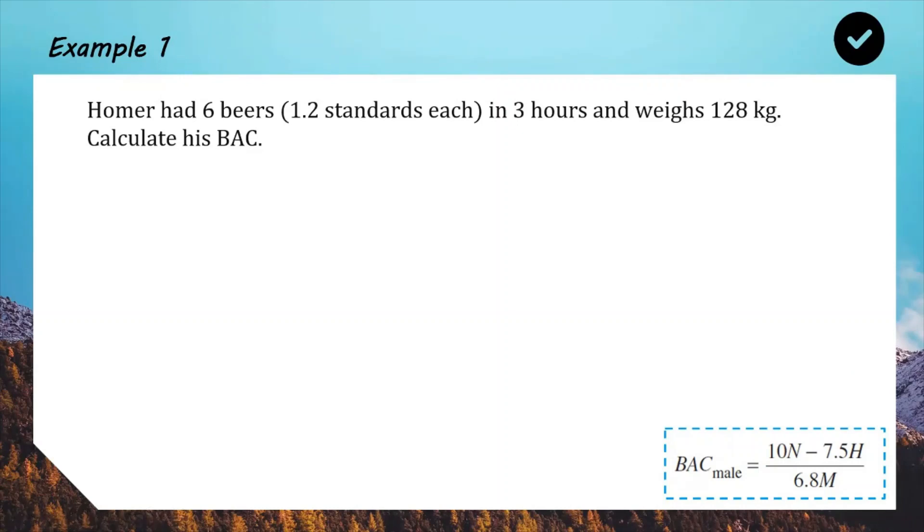Hope you've had a go. Now I'm going to have a go myself, and we can see if we've got the same answer. First of all, number of drinks is six lots of 1.2 - six beers, 1.2 standards each, so six times 1.2. For H, we have number of hours, which is three. And for M, we have mass, which is 128 kilograms. Those are the three figures that we're going to sub into our formula, N, H, and M. So here we go. BAC equals 10 lots of 7.2 minus 7.5 lots of 3, all divided by 6.8 times the mass. We put that through the calculator, and we get an answer of 0.057. That's just been rounded to three decimal places, but quite often you'll see these rounded to two decimal places. So, there is our answer. If this was an Australian case, Homer would be just over the legal limit, and he would have to wait before his BAC goes below 0.05.